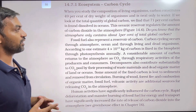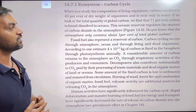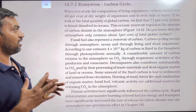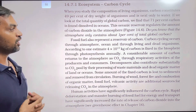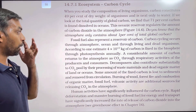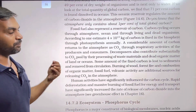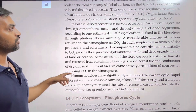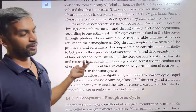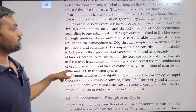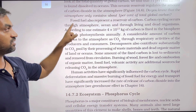The oceanic reservoir regulates the amount of carbon dioxide in the atmosphere. The atmosphere contains only about 1% of the total global carbon. Fossil fuels such as coal and petrol also represent a reservoir for carbon. Carbon cycling occurs through the atmosphere, ocean, and through living and dead organisms.